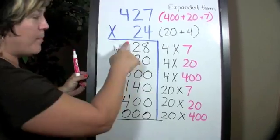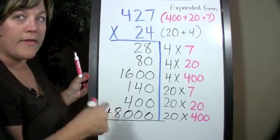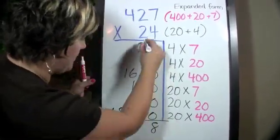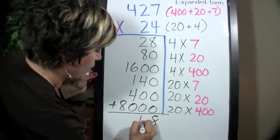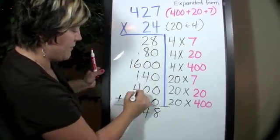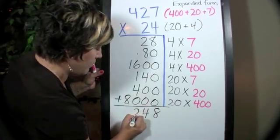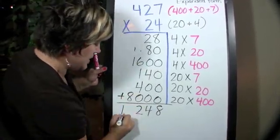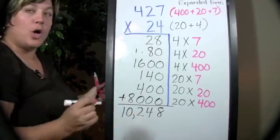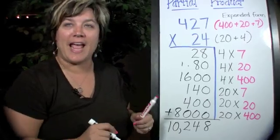When we add up all of our partial products, we're going to find the total product. Adding 28, 80, 1,600, 140, 400, and 8,000, our total product is 10,248.